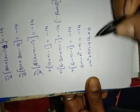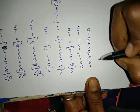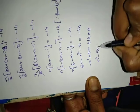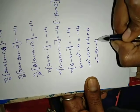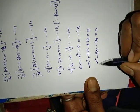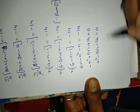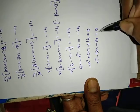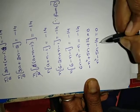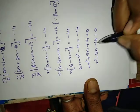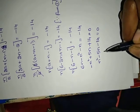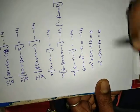Rearranging: minus N squared plus 5N plus 14 equals to 0. Taking minus as common and sending to the other side: N squared minus 5N minus 14 equals to 0.